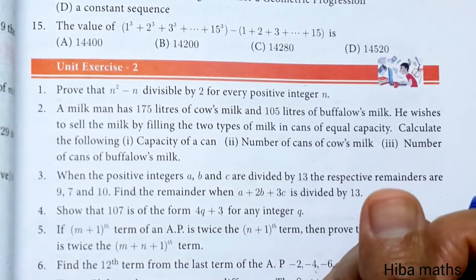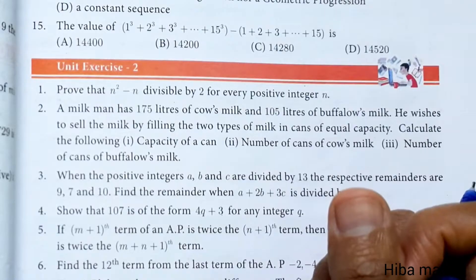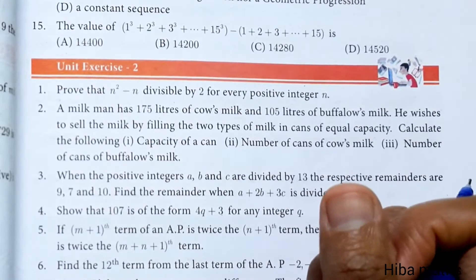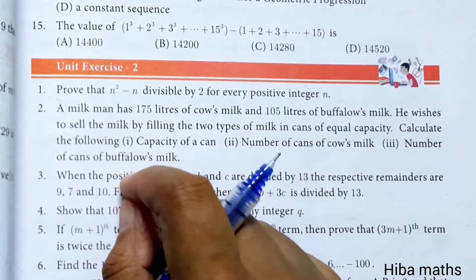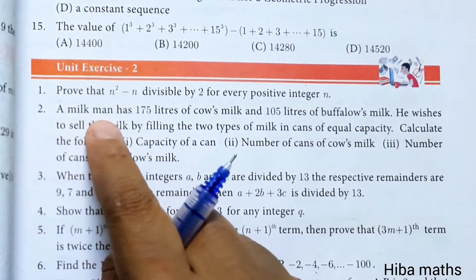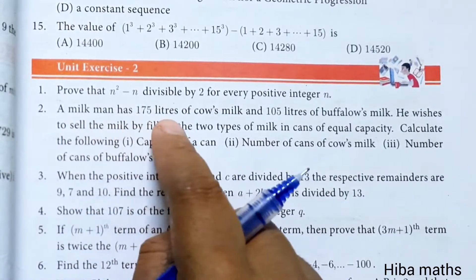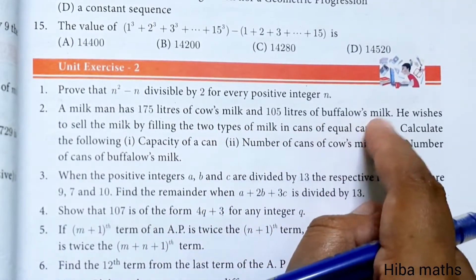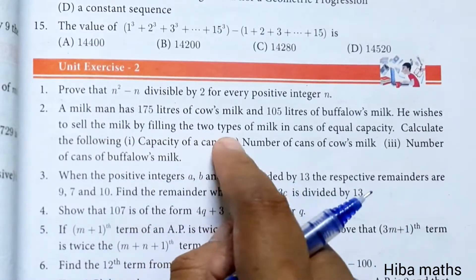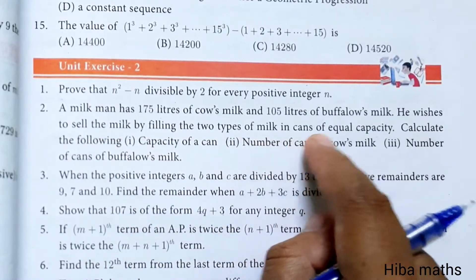Hello students, welcome to Hiba Maths, 10th standard Maths, Chapter 2: Numbers and Sequences, Unit Exercise 2, Question 2. A milkman has 175 liters of cow's milk and 105 liters of buffalo's milk. He wishes to sell the milk by filling the two types of milk in cans of equal capacity.